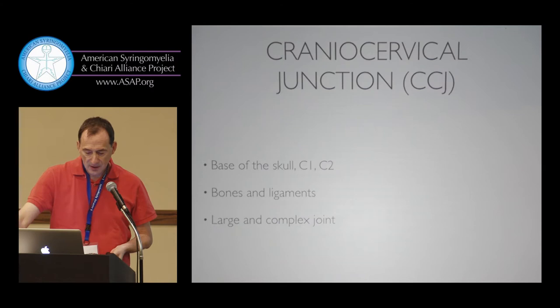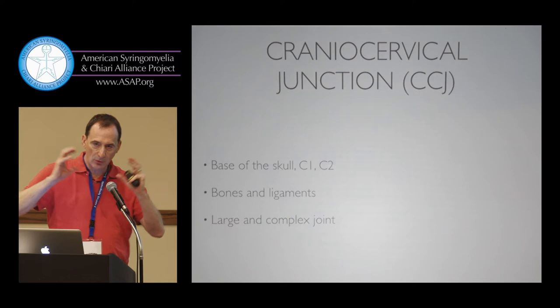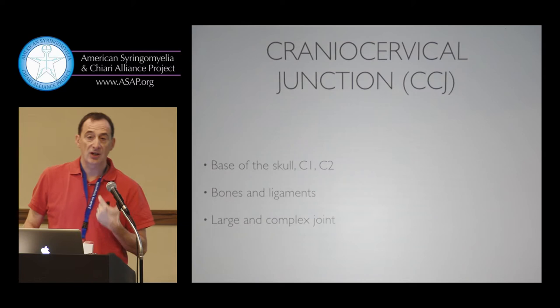What's the cranioservical junction? It's a region of our anatomy at the border between the skull and the cervical spine. It is composed by the base of the skull, the first vertebra, the second vertebra, bones and ligaments — and it is a large, complex joint.